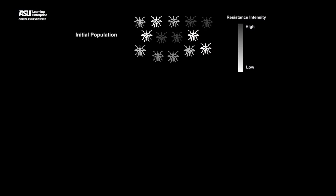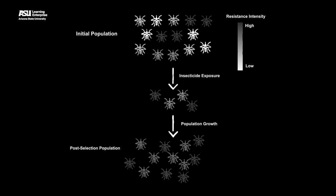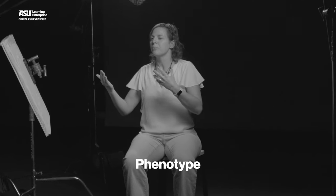Natural selection results from a process whereby organisms which are better adapted to their environment tend to survive at higher rates and produce more offspring. As a result, the next generation will contain more individuals descending from those better-adapted parents. Over generations, you can observe certain phenotypes, and therefore their associated alleles, increase in frequency in the population.